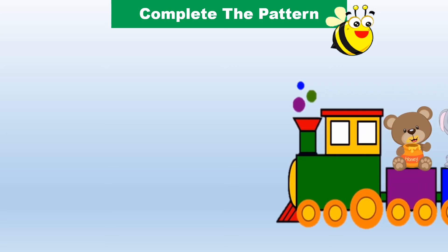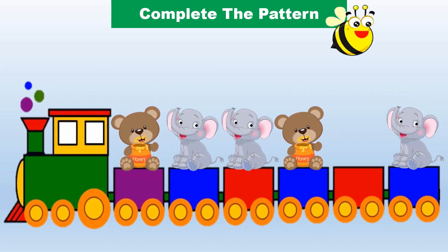Oh, wow! Let's see who all are going on the train. Ted the teddy, Elephant Ellie, Elephant Ellie, Ted the teddy. And here comes the missing spot. Elephant Ellie. Can you tell me what will come in the missing spot? Yes, you are right. It's Elephant Ellie. So what do you think? Is this a repeating pattern or a growing pattern? Yes, you got that right. This is a repeating pattern. You did a great job.